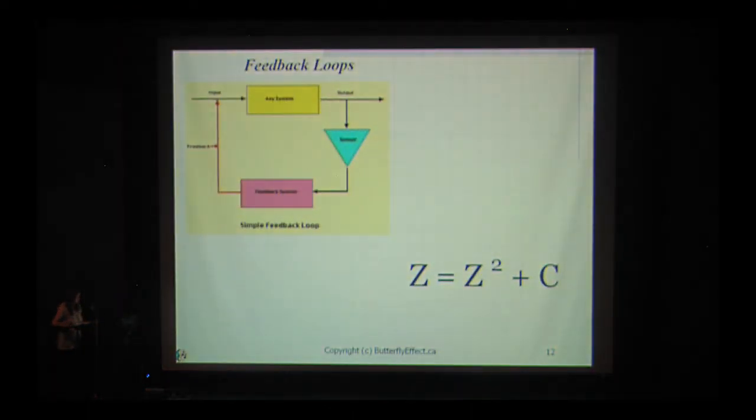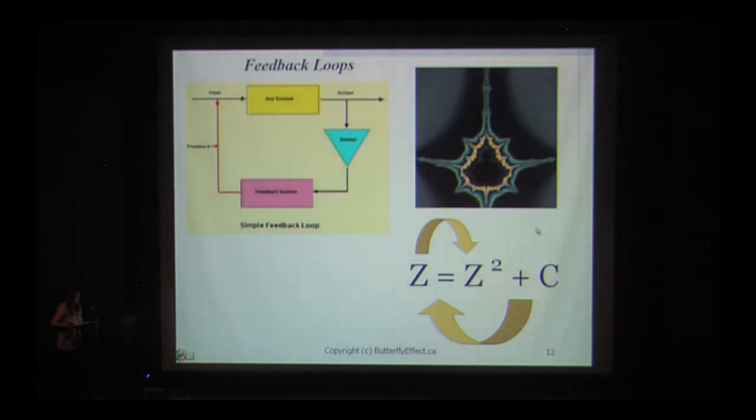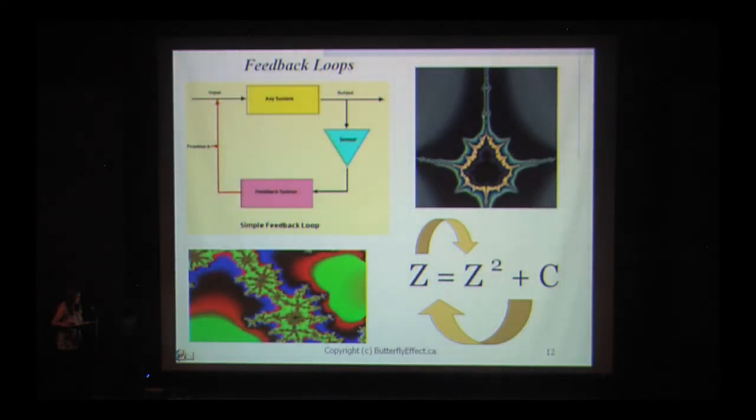Fractals are generated by iterating a function or by applying a feedback loop to a system. Iterating a function means they can take the output from the equation and feed it back into the equation. A fractal then is what emerges from these feedback systems. We call this the emergent property of the system.